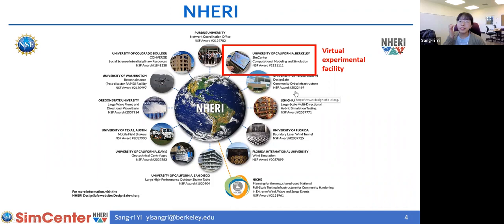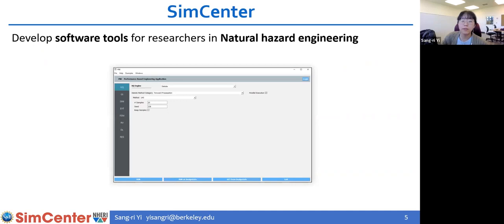This shows the position of SimCenter. We are part of the NHERI network, which stands for Natural Hazard Engineering Research Infrastructure. As you can see in this figure, most of the participating facilities are experimental facilities. We develop software, so we call our services a virtual experimental facility in the context of research infrastructure.